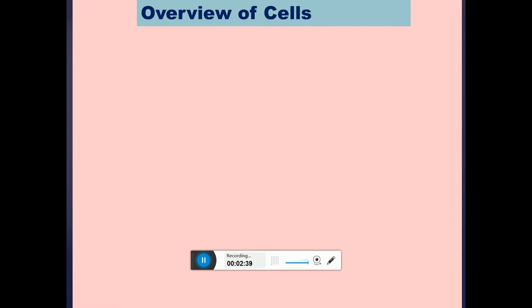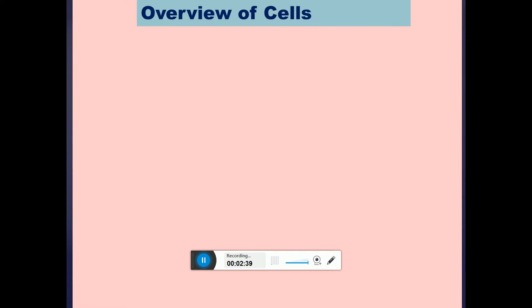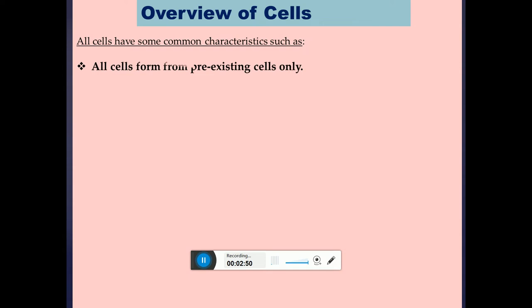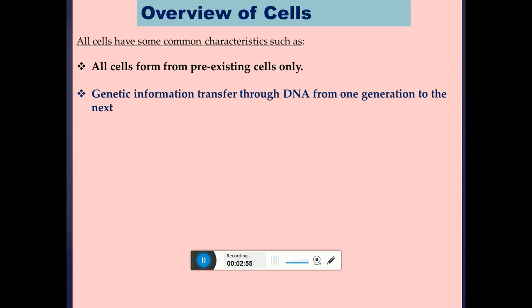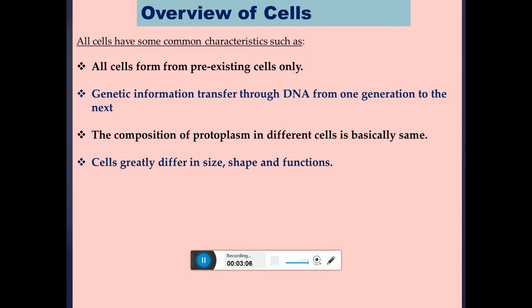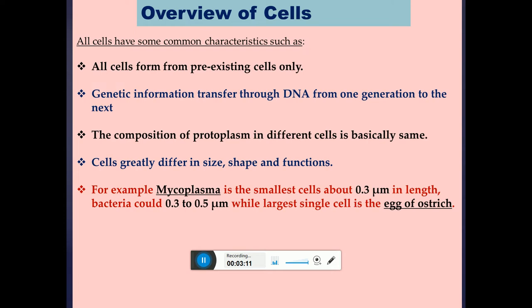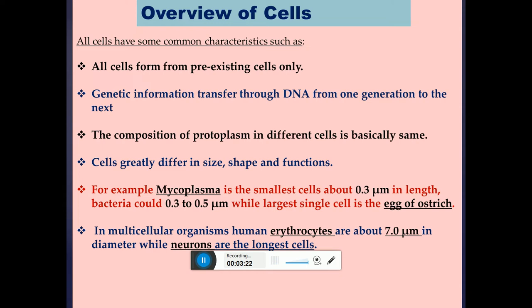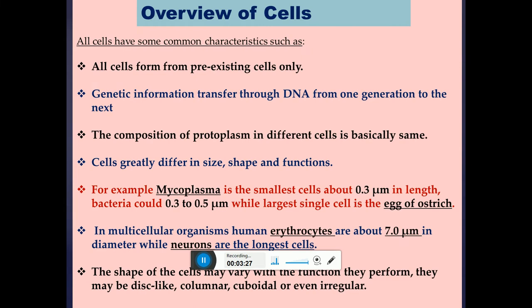Moving to the overview of the cell, all cells share common characteristic features. First, all cells are formed from pre-existing cells. Genetic information is transferred through DNA from one generation to the next. The composition of protoplasm in different cells is basically the same, though cells greatly differ in size, shape, and function. For example, mycoplasma is the smallest cell at about 0.3 micrometers. The largest single cell is the egg of an ostrich. Human erythrocytes are about 7 micrometers in diameter, while neurons are the longest cells.